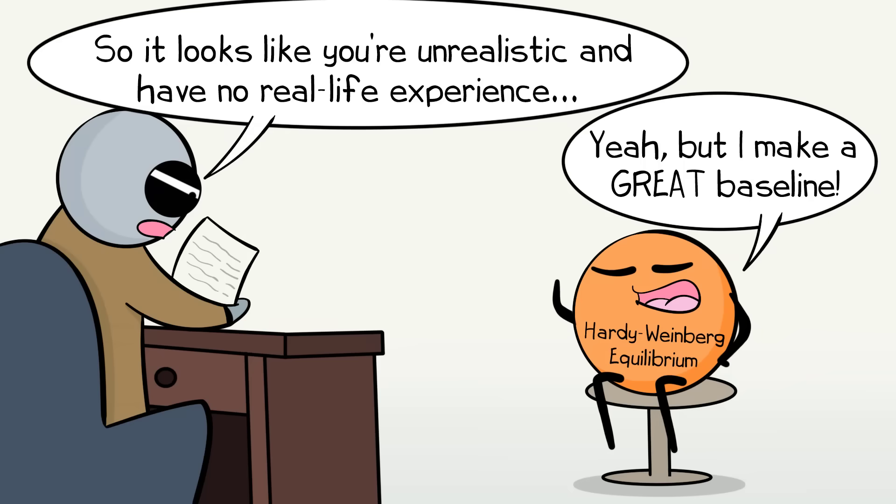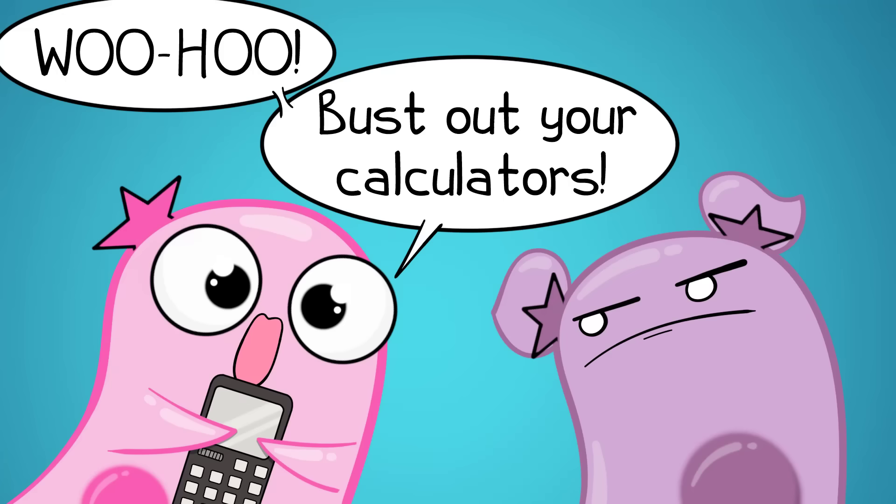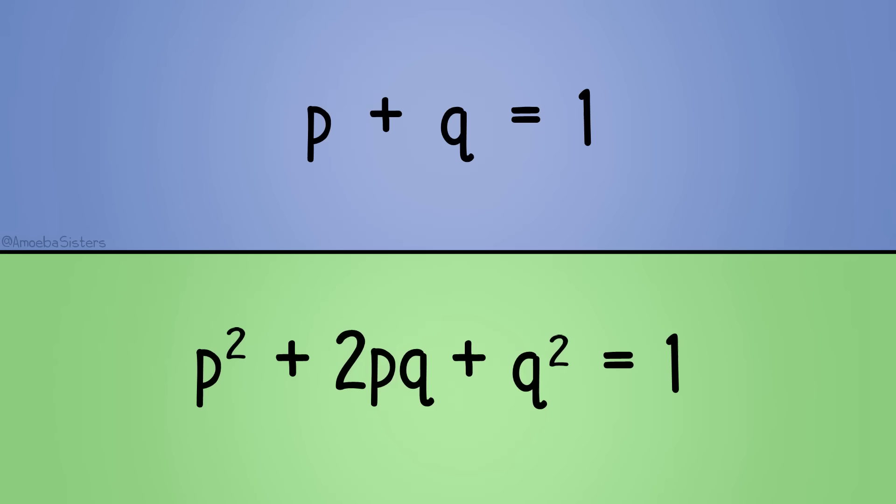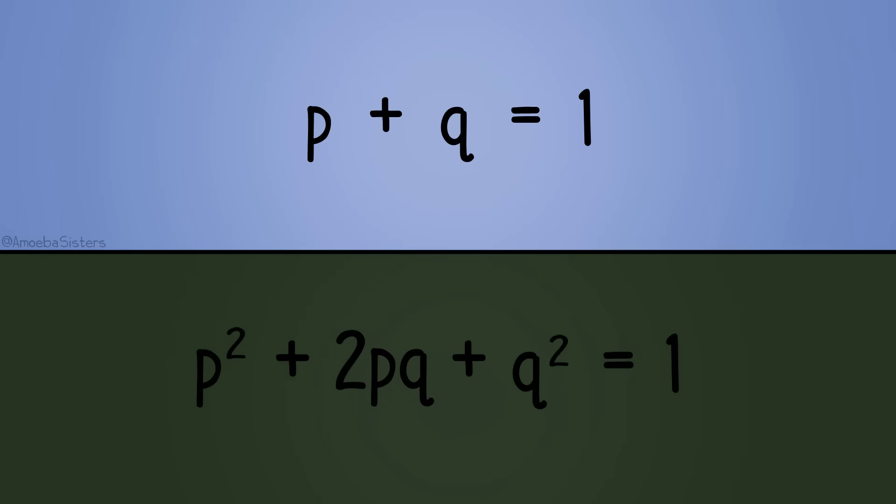The Hardy-Weinberg equilibrium gives you this baseline to compare how an evolving population could compare to one that remains constant without evolutionary forces acting upon it. And now, let's explore the math. So, there are two equations in Hardy-Weinberg equilibrium that we will focus on. We're going to start with the first one.